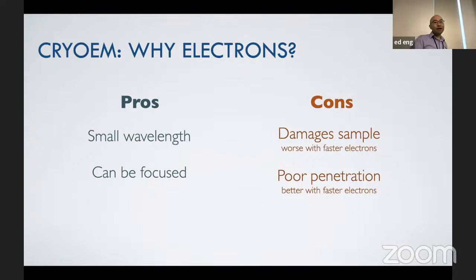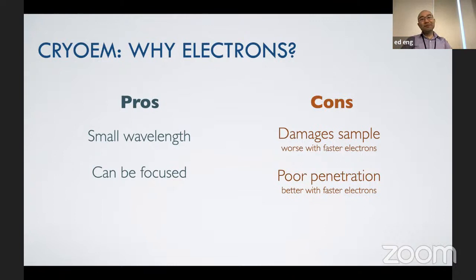The problems: electrons have a lot of energy and can damage your sample quite a bit. They also have very poor penetration. We have a vacuum in the microscope because if we had air and shot an electron, it wouldn't get very far — maybe a few centimeters — and a lot of energy would be dispersed as heat, which could be very destructive to the electronics.